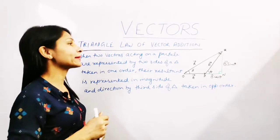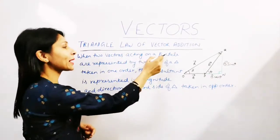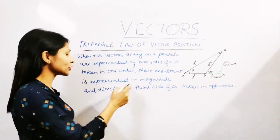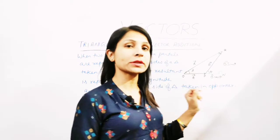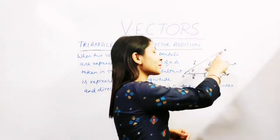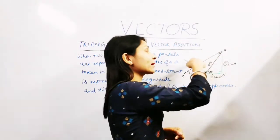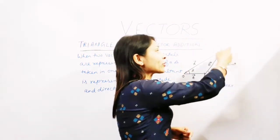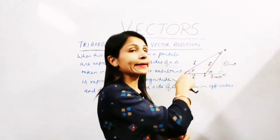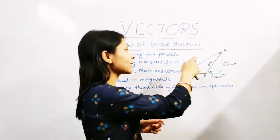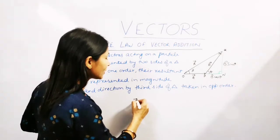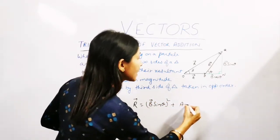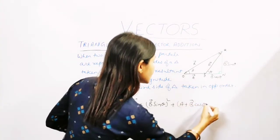First is our triangle law of vector addition. When two vectors acting on a particle are represented by two sides of a triangle, taken in one order, their resultant is represented in magnitude and direction by the third side of the triangle, taken in opposite order. Here we have two vectors, vector A and vector B, both acting at a certain angle, and I have to find the resultant. I will extend OP to a certain point N and draw a perpendicular QN on this. This will become a right angle triangle and by the Pythagoras theorem, we can easily find the resultant.